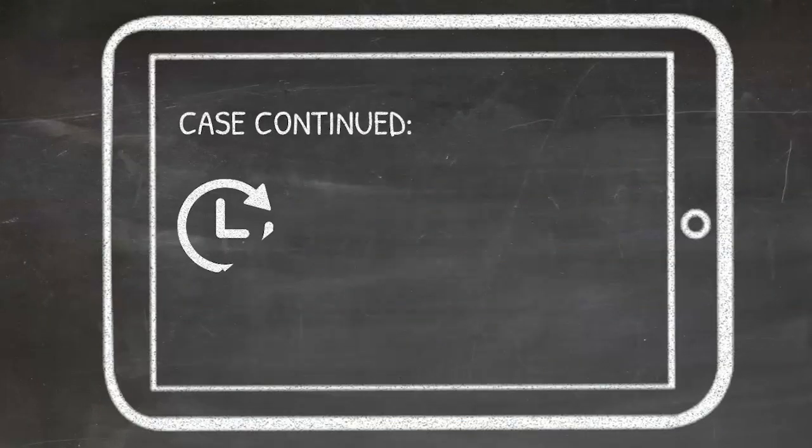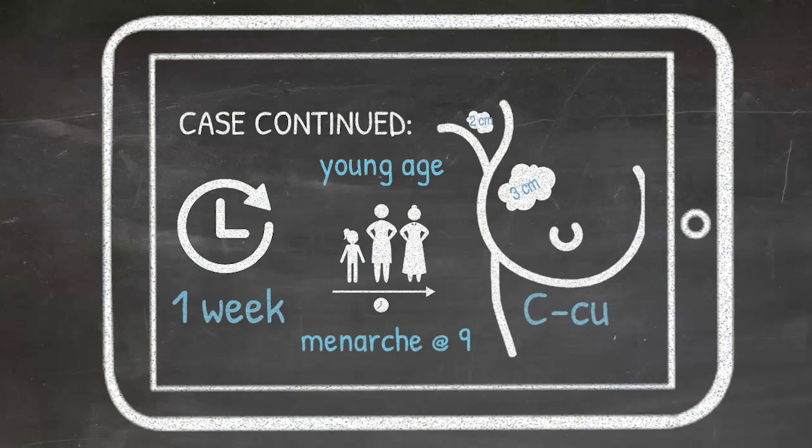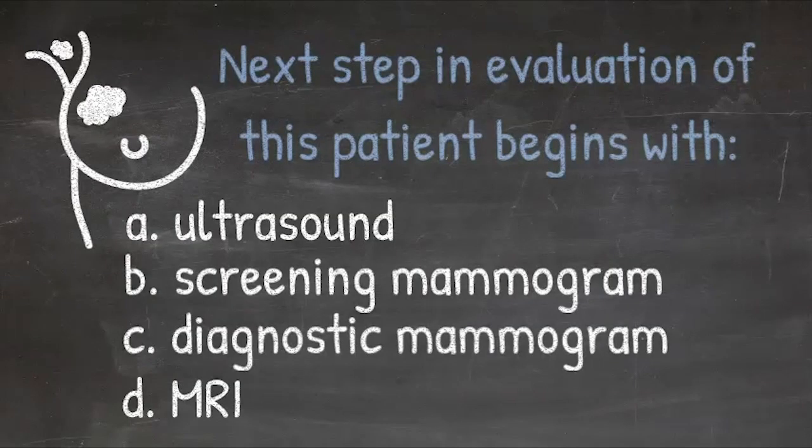Case continued. The patient noticed the palpable mass about a week ago in the shower. She hasn't had any other symptoms. Her only risk factors are her young age and early menarche at nine years old. On physical exam, she's a C cup, with the only abnormal findings being a three-centimeter palpable immobile mass in the right upper outer quadrant and a two-centimeter palpable node in her axilla. What are the next steps in her evaluation?